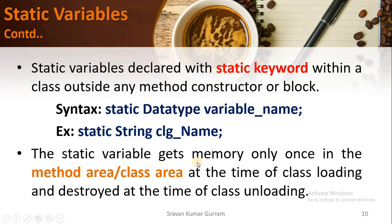Static variables get memory only once, in the method area, at the time of class loading, and are destroyed at the time of class unloading — that is, when the program stops execution, the memory is deallocated for the static variables.